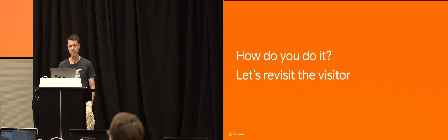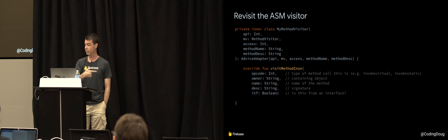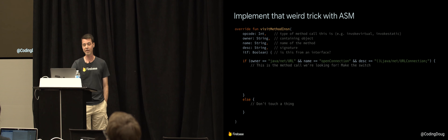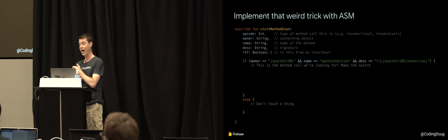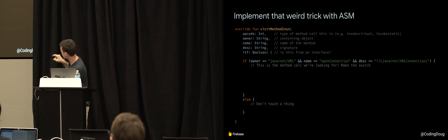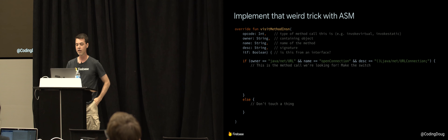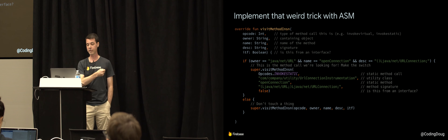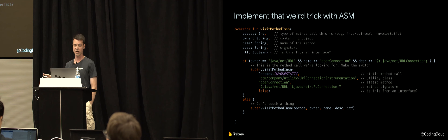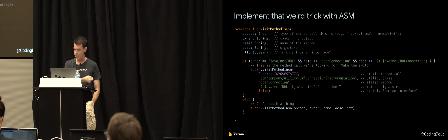Inside visitMethodInstruction(), which gets invoked for every bytecode instruction, we check: is this an invocation on java/net/URL, is the method name openConnection, and does the descriptor match ()Ljava/net/URLConnection;? If all three match, we emit an invokeStatic to our utility class instead of the original invokeVirtual. If it's not a method we're interested in, we just pass the instruction through unchanged.